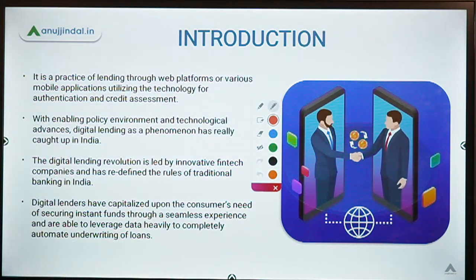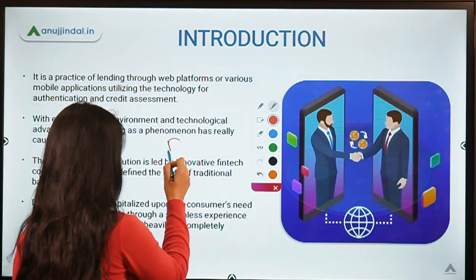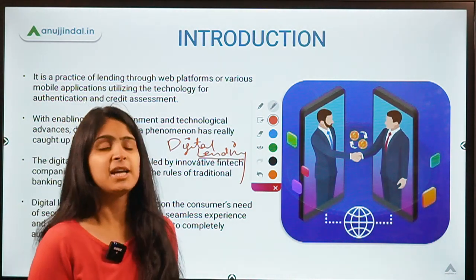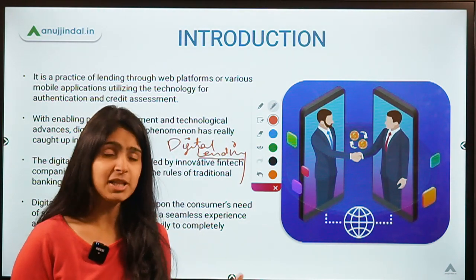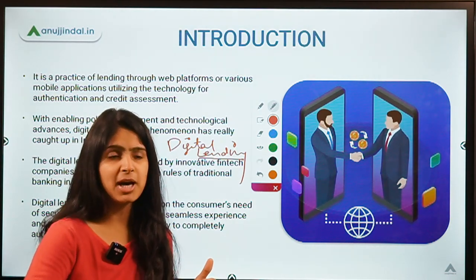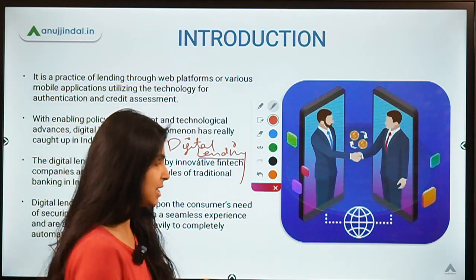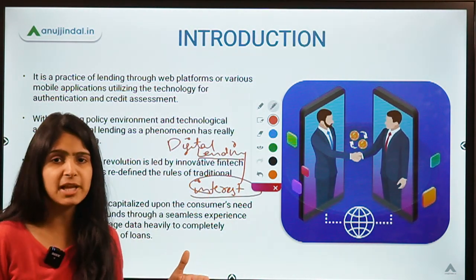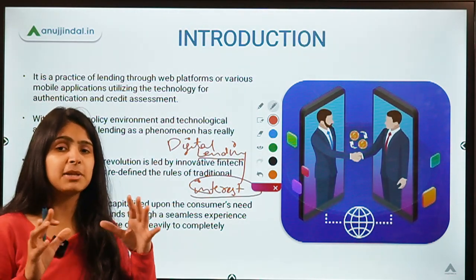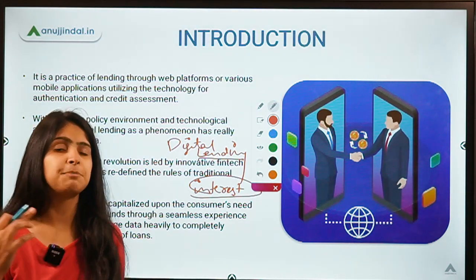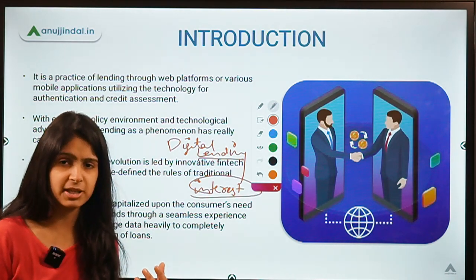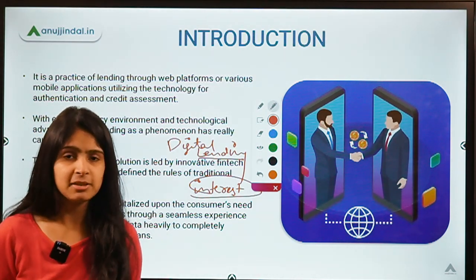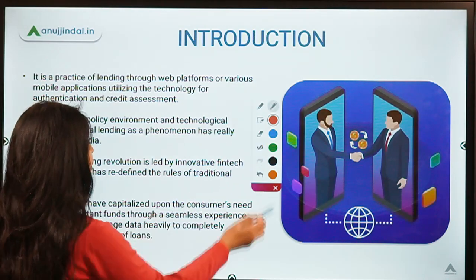Digital lending — the name itself tells you it has something to do with technology. Lending is the simple business where you give money to another party, collect it back after some time, and charge interest for that period. When this procedure becomes entirely online — taking place over internet connections rather than people meeting together — and uses artificial intelligence and pre-set algorithms, it becomes digital lending. It is as simple as lending online.